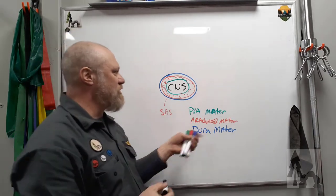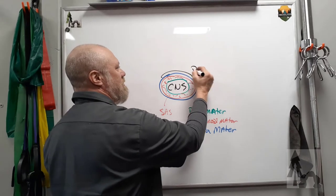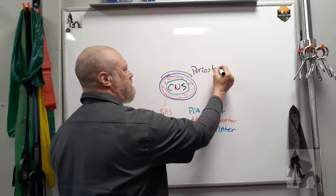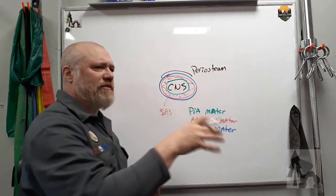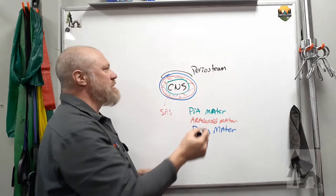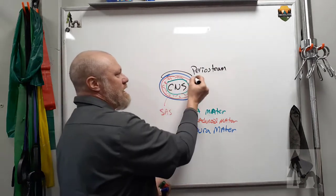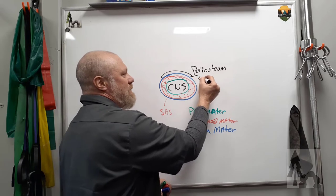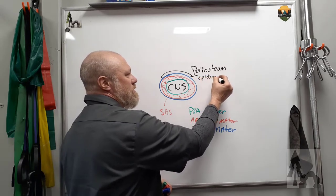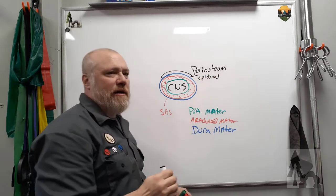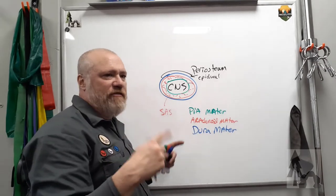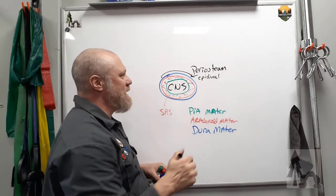The dura mater has two potential spaces. Just superficial to the dura mater is the periosteum of the skull, internal periosteum of that diploid bone of the skull plates. And potentially, you could have an epidural space. So you could get blood, pus, air, fluid, all sorts of things in the epidural space.